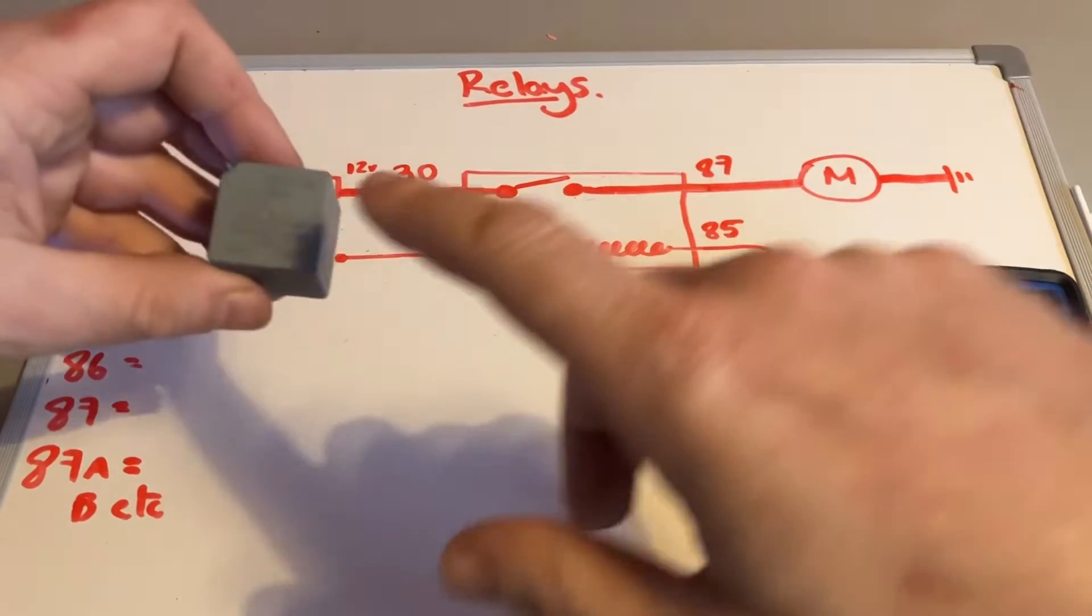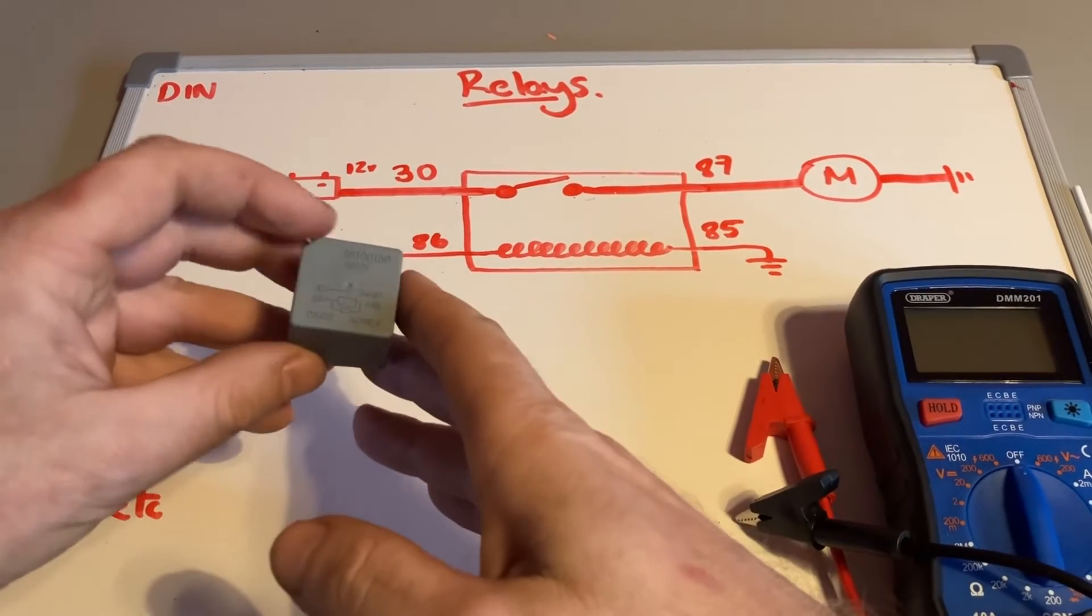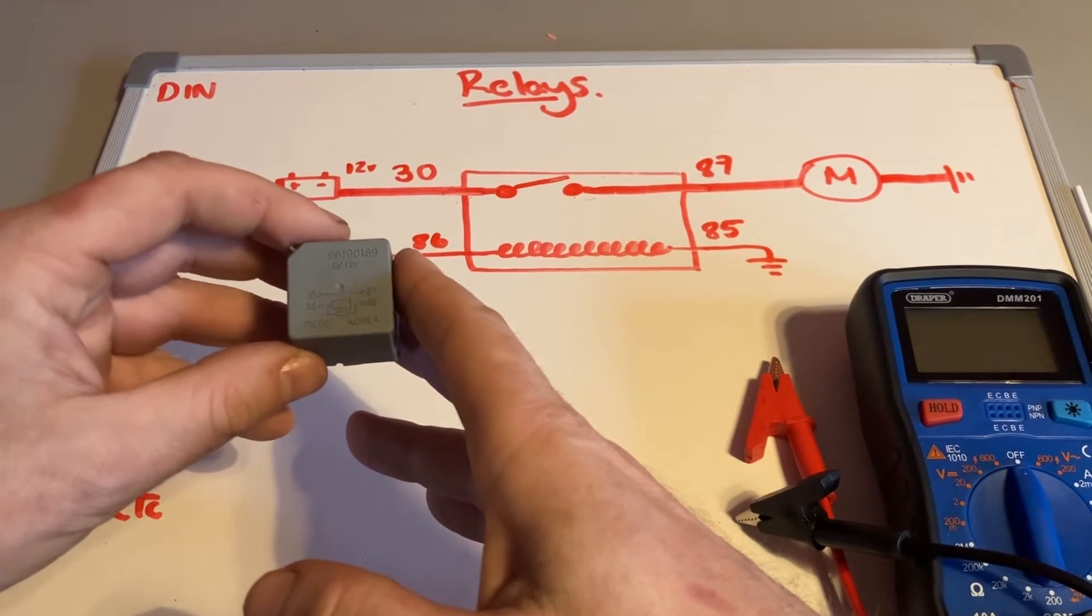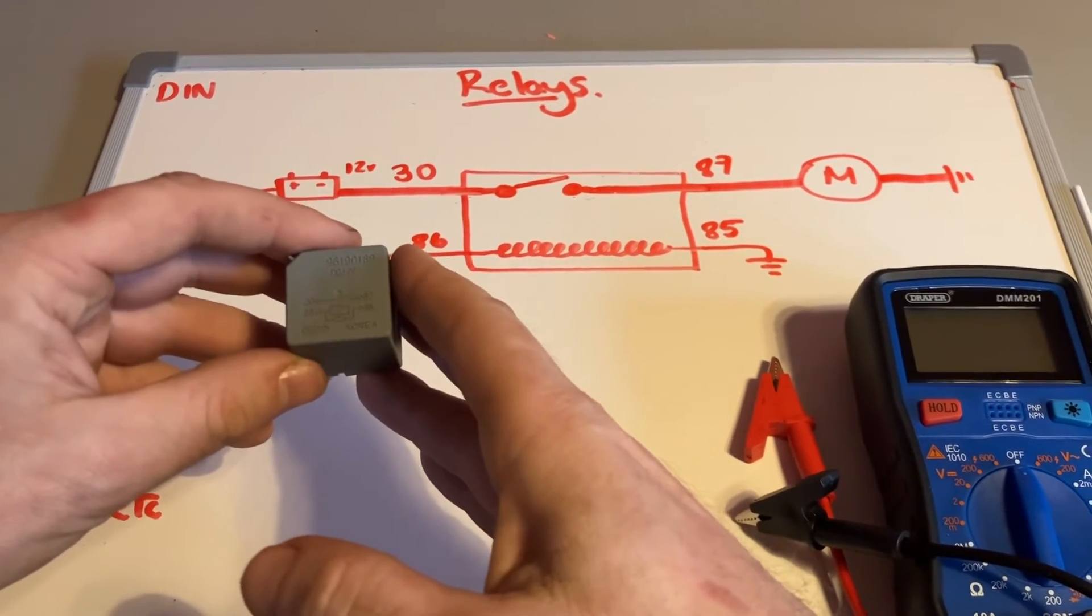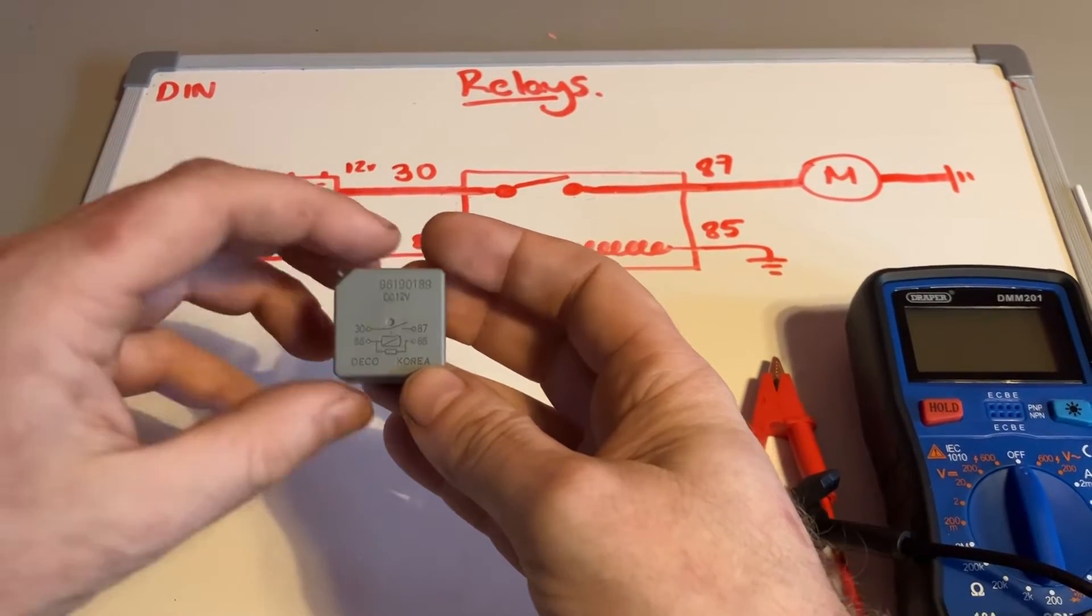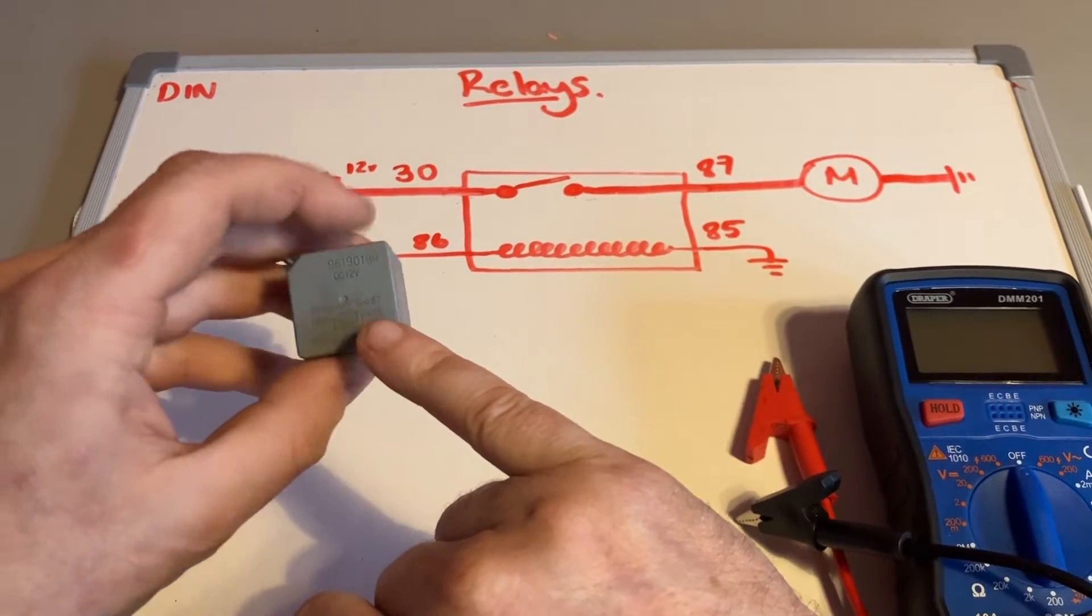So if the circuit's not working, you've tested the fuse, maybe you've tested the component directly as well with a voltage supply test - tested voltage directly onto the component like the motor - then you might want to check your relays as well. So the first easy thing to do is to check the coil, 86 across 85.